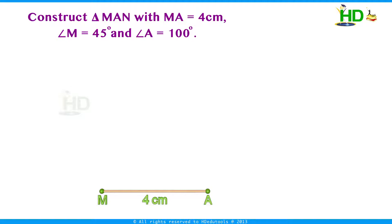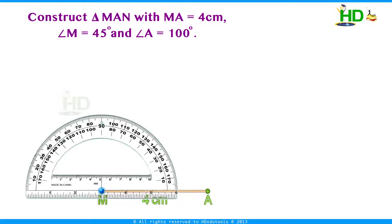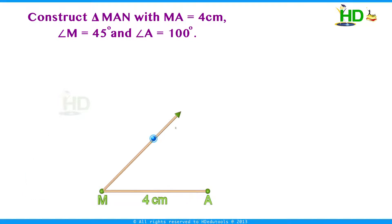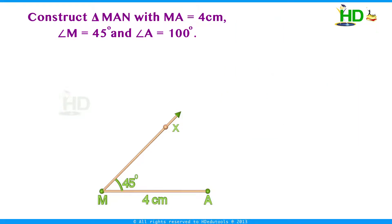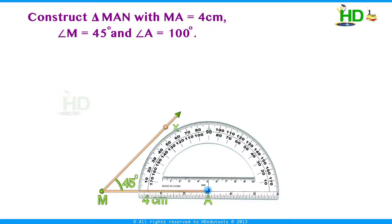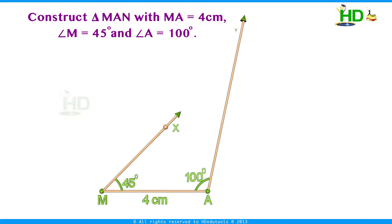Using a protractor, draw angle 45 degrees at M: place the protractor at M, mark a point at 45 degrees, join these two, and draw ray MX making 45 degrees at M. Without a protractor, the angular bisector of 90 degrees gives 45 degrees. Now draw ray AY making 100 degrees at A: place the protractor center at A, mark a point at 100 degrees, and join to get ray AY. Extend MX — where these two rays intersect, mark point N. This is triangle MAN with MA = 4 cm, angle M = 45 degrees, and angle A = 100 degrees.